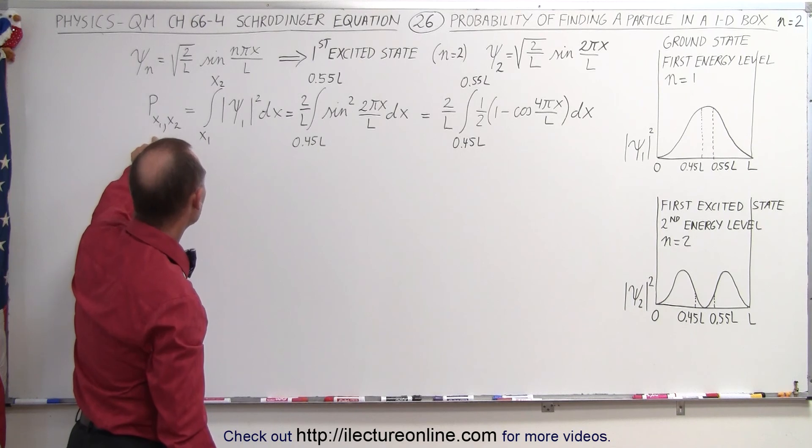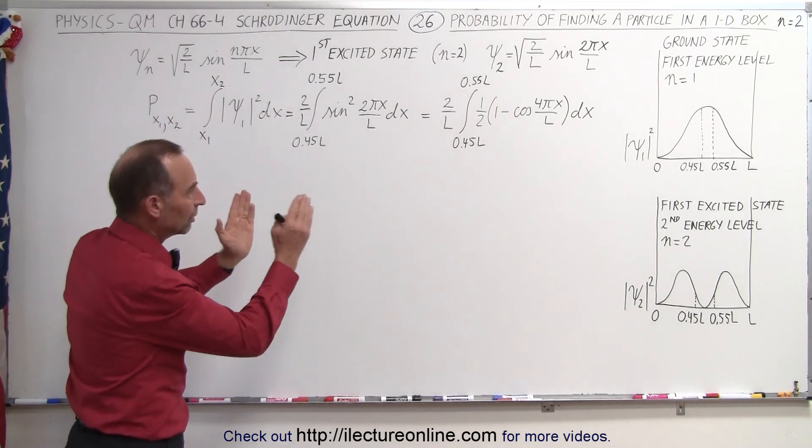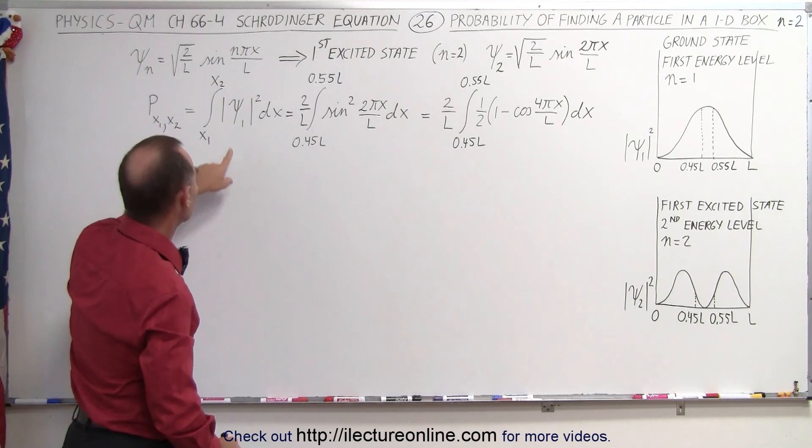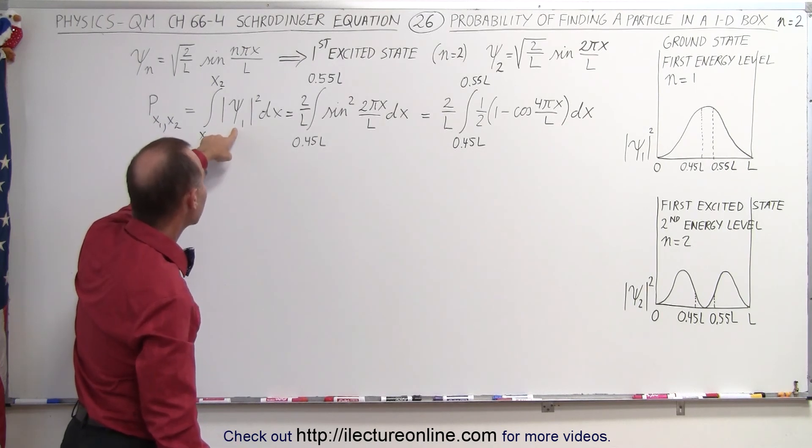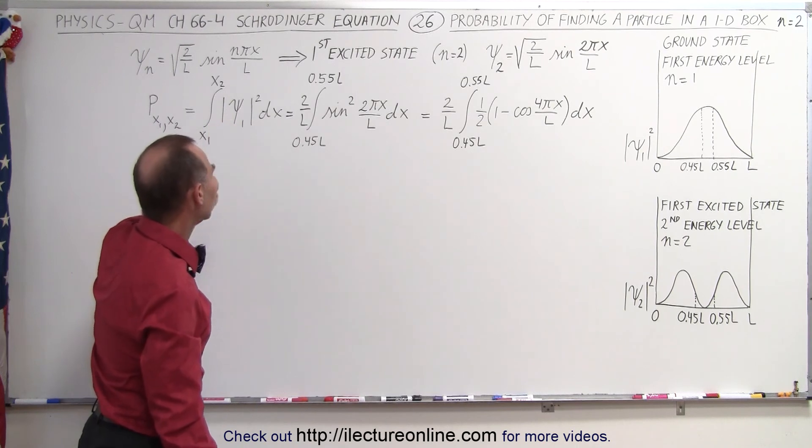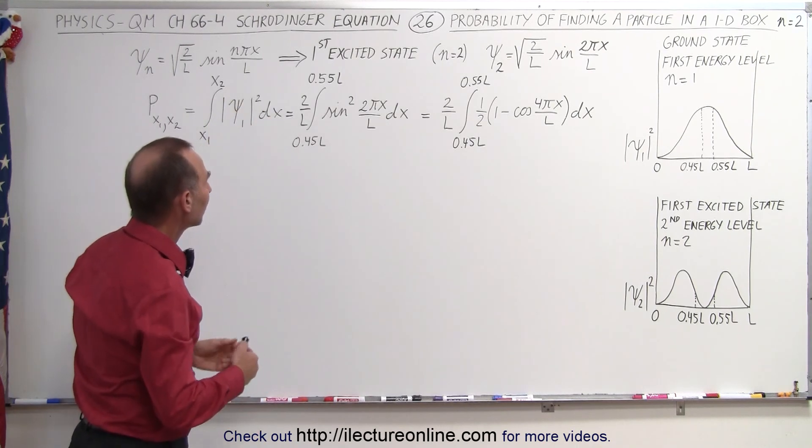So again the probability will be the integral from x1 to x2 where those are the limits of the region that we're trying to consider. And of course we take the equation squared. This becomes the probability density function. We integrate that and let's see what we get.